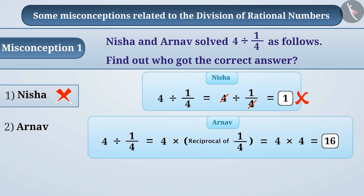The correct understanding is that to divide rational numbers, we keep the first number exactly the same and multiply it by the reciprocal of the second number. For example, here we will keep 4 as it is and multiply the first number by the reciprocal 4 of the second number 1/4. This will give us the correct result.